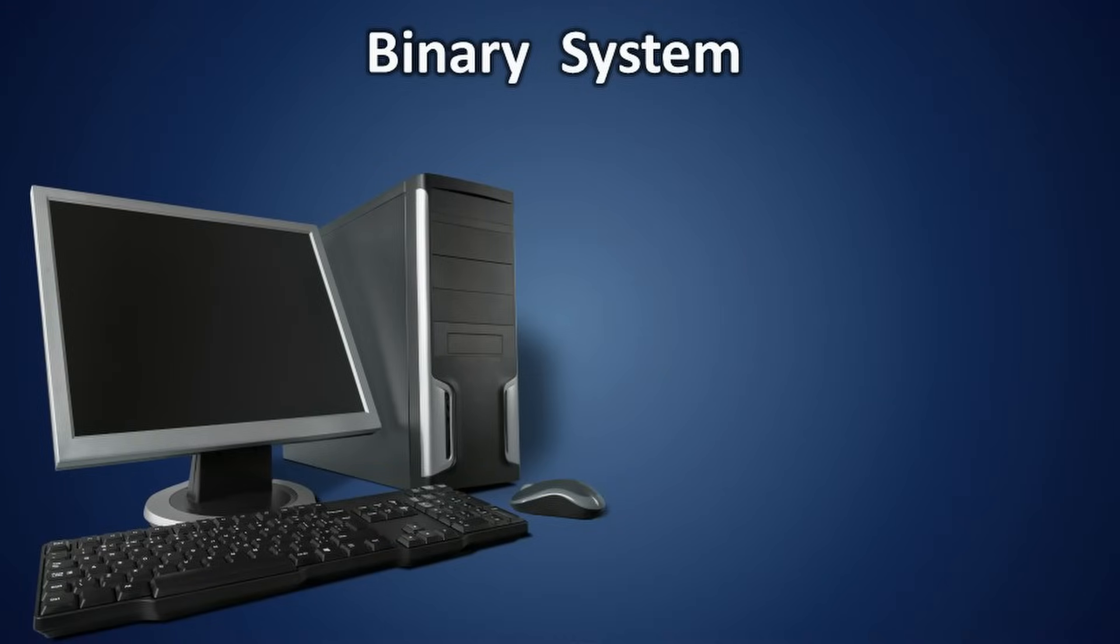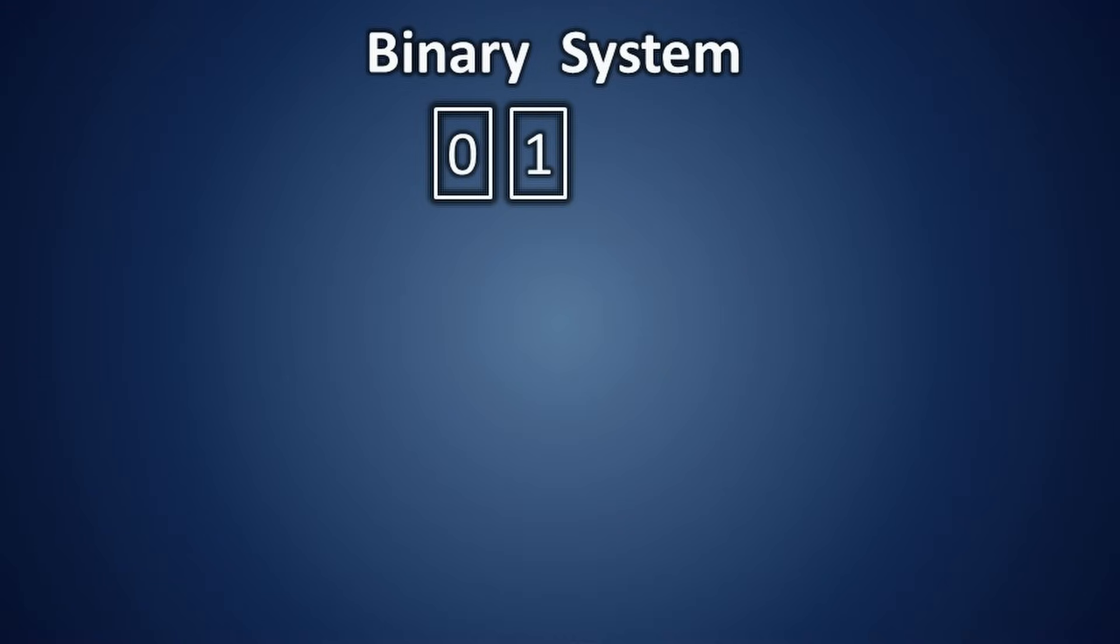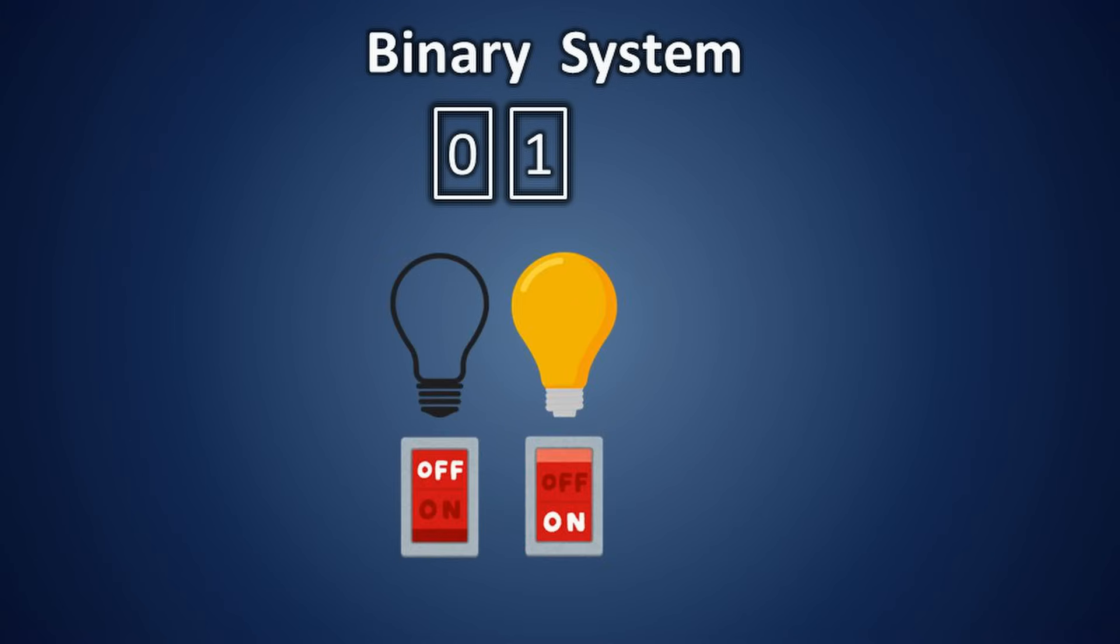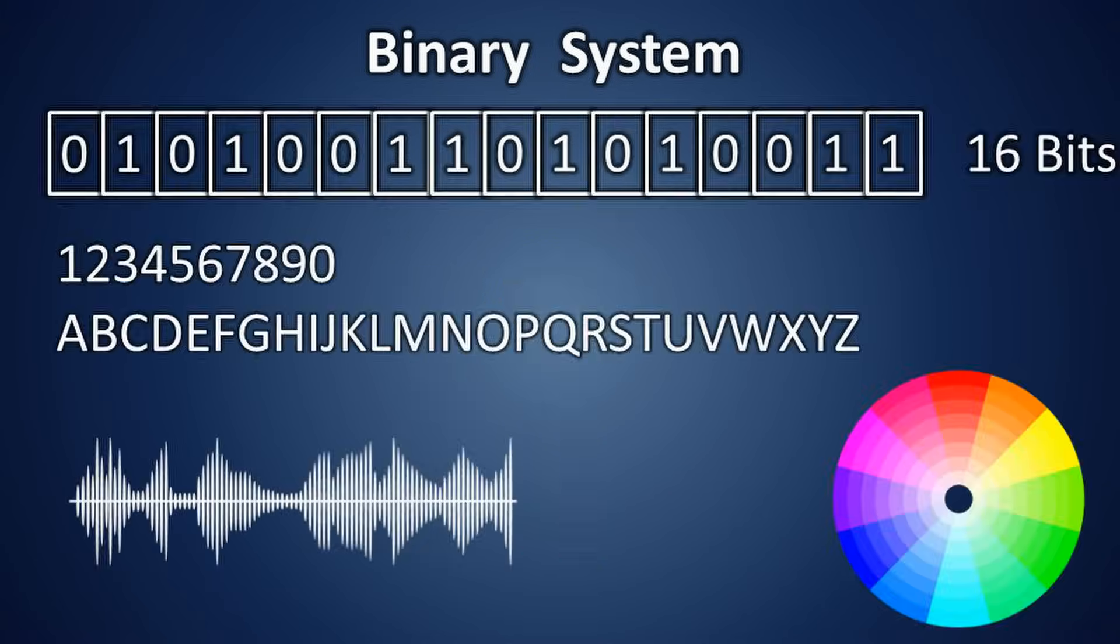Classical computers operate using the binary system, which consists of only two digits, zero and one. This is similar to a bulb being either on or off. Using just these two numbers, classical computers can represent everything we use today: numbers, alphabets, colors, images, and more.